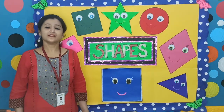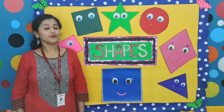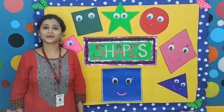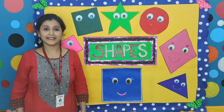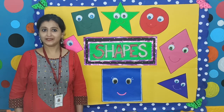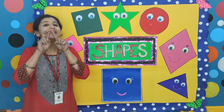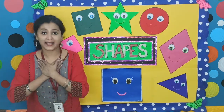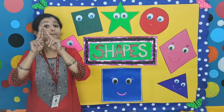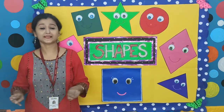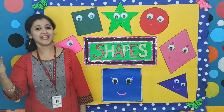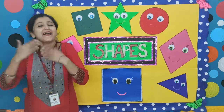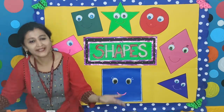Now we will sing a beautiful song about Sammy the square. Please sing it with me. Sammy square is my name, my four sides are just the same. I am a square, that's my name.